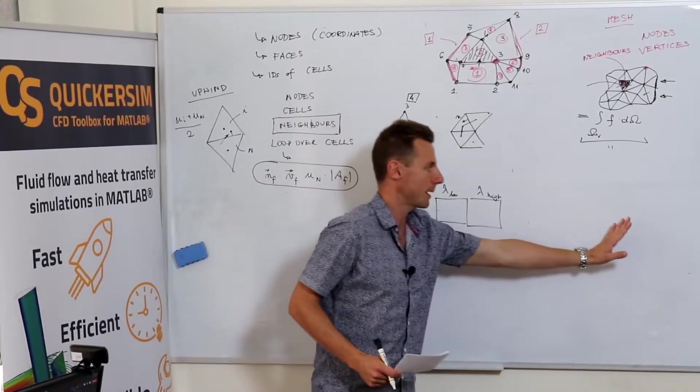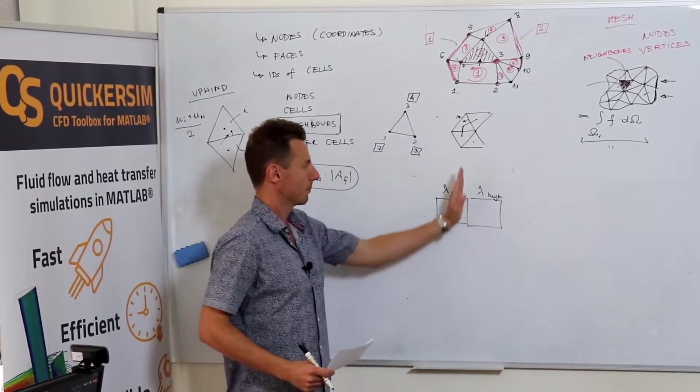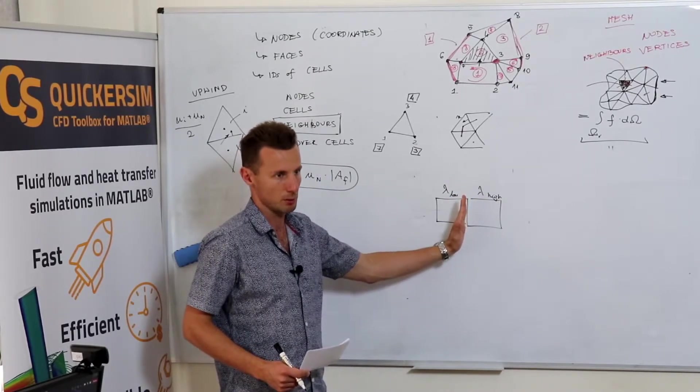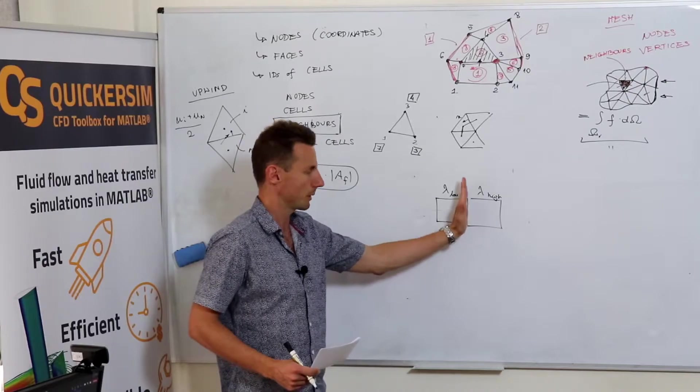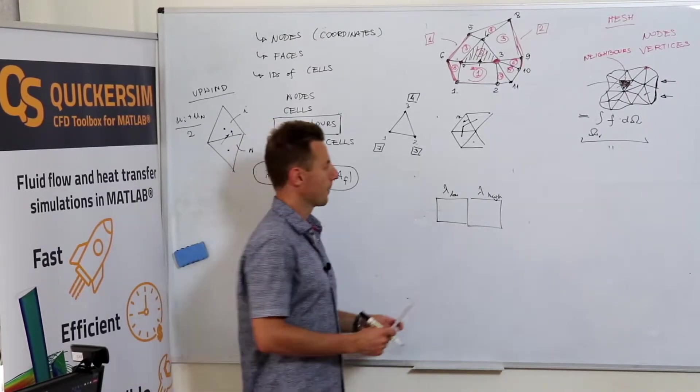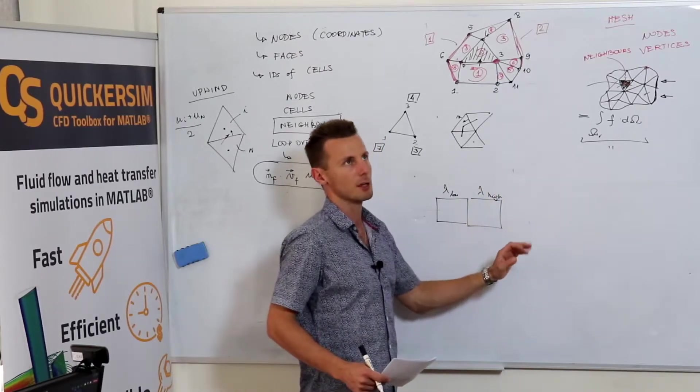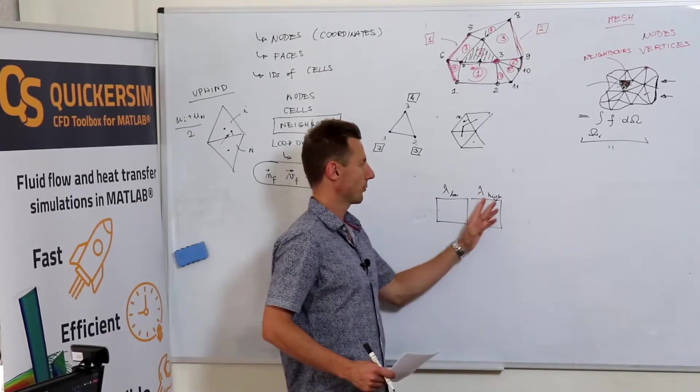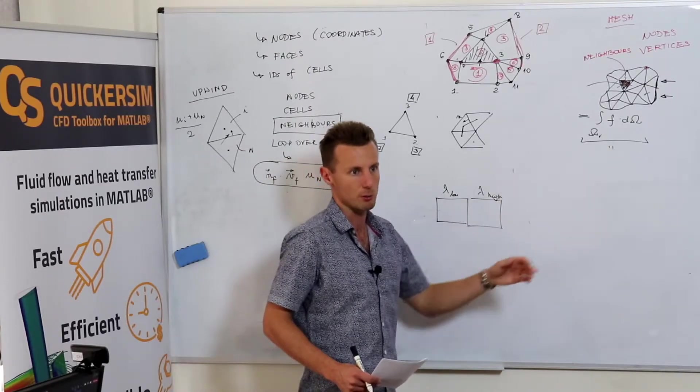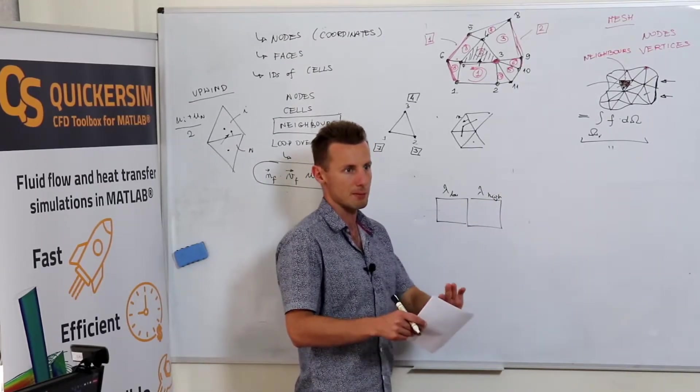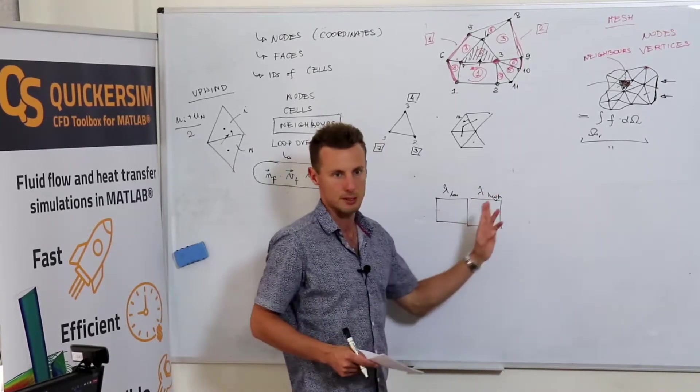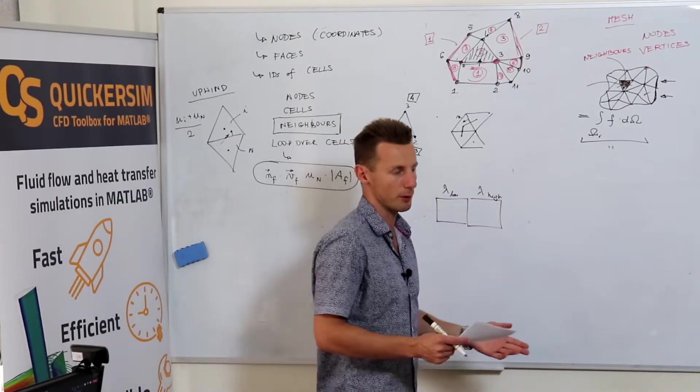You might have many, many, many cells in your mesh, but somewhere you've got the interval between two materials and you've got two neighbouring finite volumes. Or you might have just the whole field of variable conductivity that changes everywhere in the domain. So you've got maybe small differences between the cells, but you have lambda differences between each pair of cells.